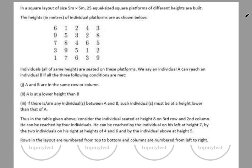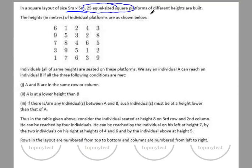This is a question from slot 1 — perhaps one of the easiest questions from slot 1. It's not very difficult but it takes a little bit of time, and you need to have some amount of care before you answer this question. In a square layout of 5×5, 25 equal-sized square platforms of different heights are built. The heights in meters of individual platforms are as shown.